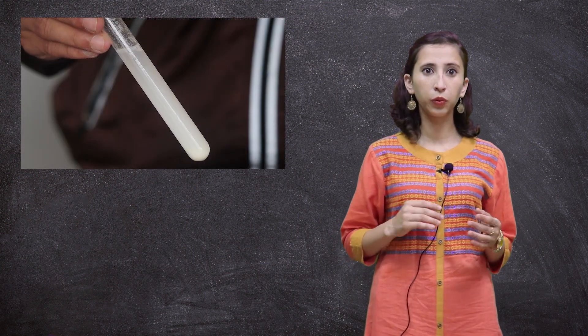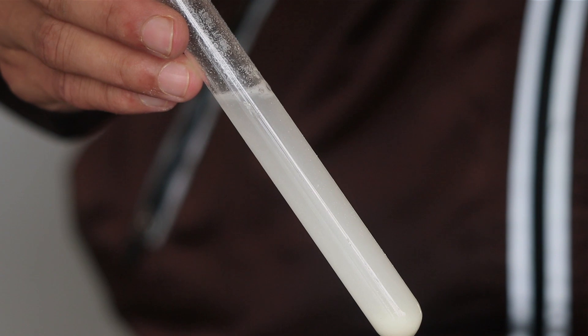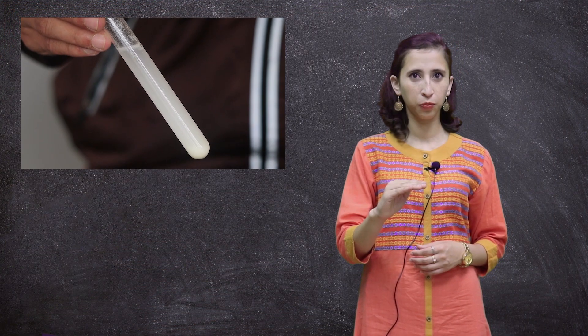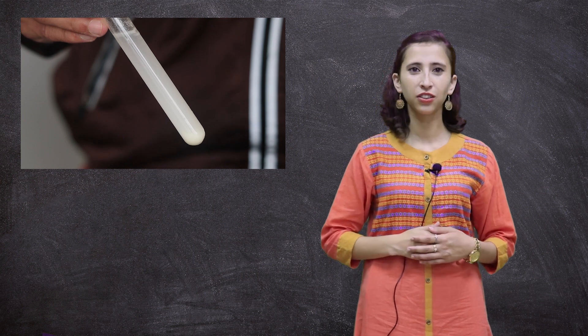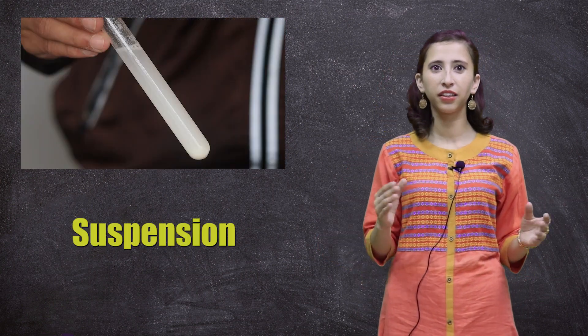After a few minutes, we can see that the mixture is not homogeneous, since we can see the flour settling down at the bottom of the test tube. This type of mixture is called a suspension, since the particles are suspended in the liquid.